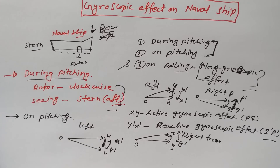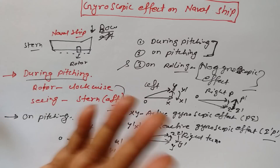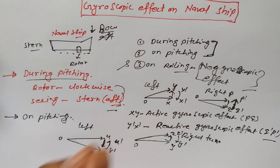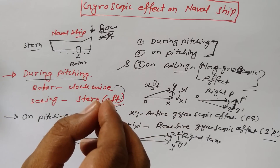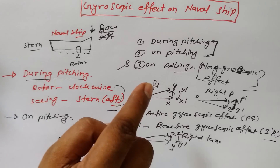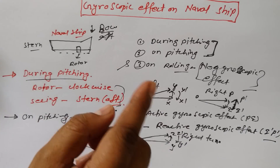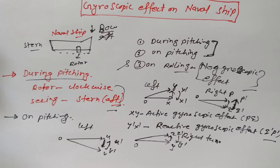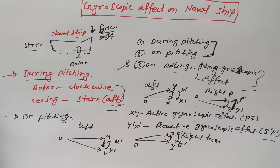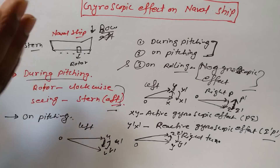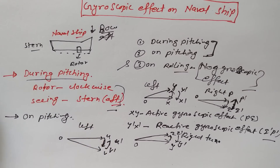This is all about the gyroscopic effect on a naval ship. As I have already shared, there is no gyroscopic effect in the case of rolling. There are only two effects: during pitching and on pitching. Remember these two effects on a naval ship in order to solve problems or share these things in the examination. Thanks for watching - see you soon in my next video, bye bye.